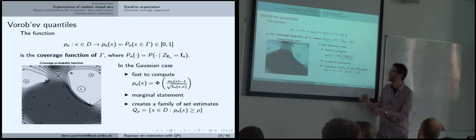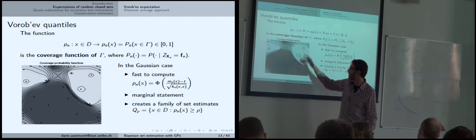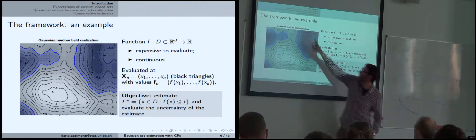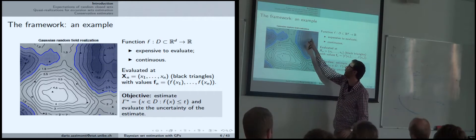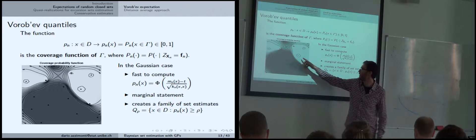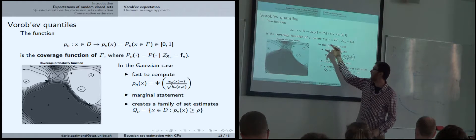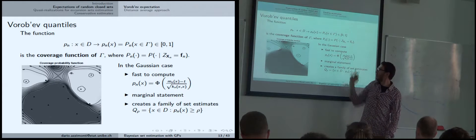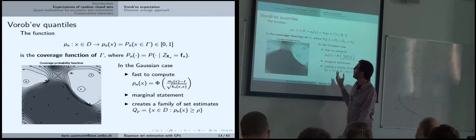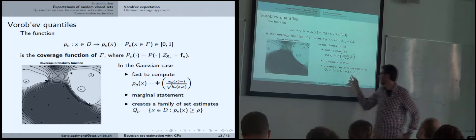What's interesting about this function is that it gives us a whole possible family of set estimates. This is the contour plot of the function for the example I was showing. Going back to the example: we have evaluations inside the set of interest. Looking at the coverage function, around certain regions there is probability one that those points are going to be inside the set of interest. We have a whole range of possible set estimates by simply thresholding this function.